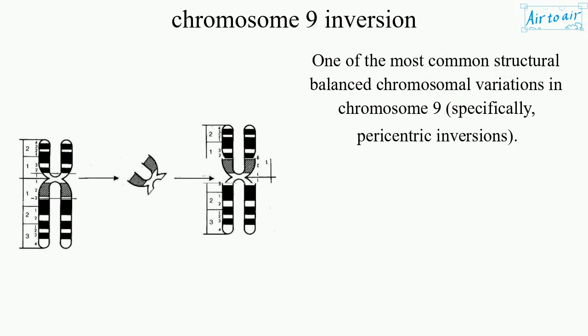One of the most common structural balanced chromosomal variations in chromosome 9, specifically paracentric inversions.